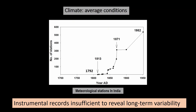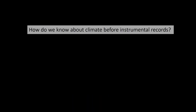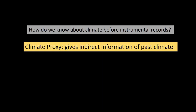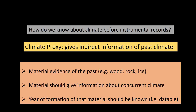Whatever instrumental record we have is insufficient to reveal long-term climate variability. So how do we know climate variability before the instrumental period? We rely on climate proxies, which give indirect information about past climate. A good climate proxy must fulfill three conditions: there should be a material evidence of the past — that material could be wood, rock, or ice. The material should give information about the climate at that time. And we should be able to assign a calendar year to that material.